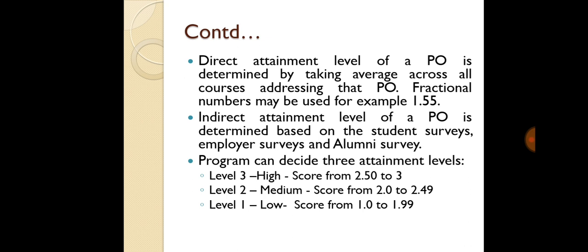In the indirect attainment, student feedback forms are taken, thereafter employer feedback forms are taken, and alumni feedback forms are taken, and from that the indirect attainment level is calculated. The program can consider three attainment levels: in level 1 (low), the score should be between 1 and 1.99; in level 2 (medium), the score is between 2 and 2.49; and in level 3 (high), the score is between 2.5 and 3.